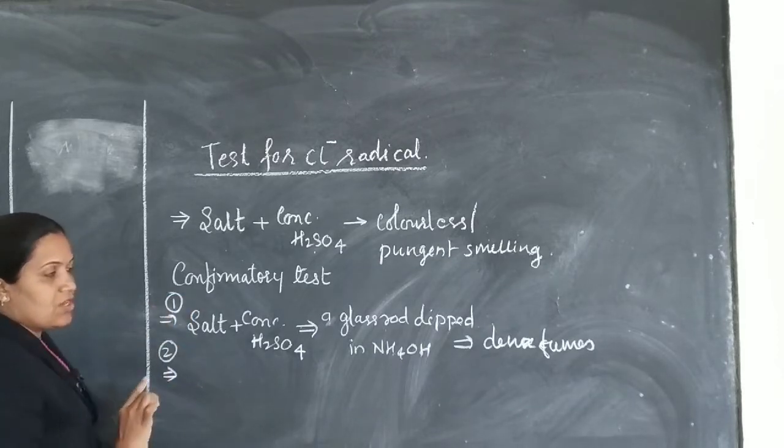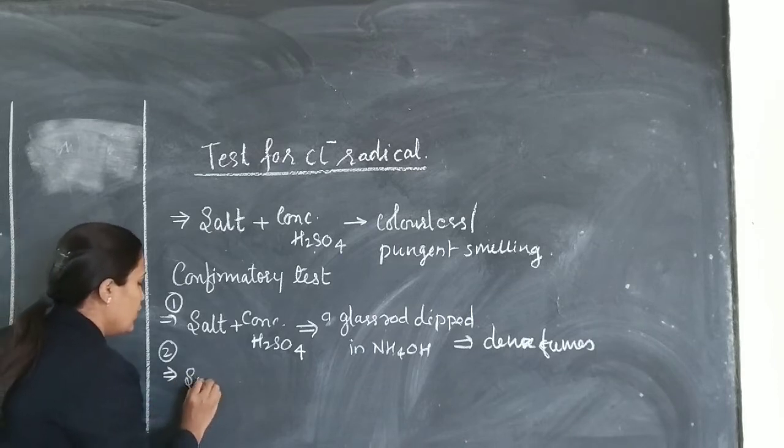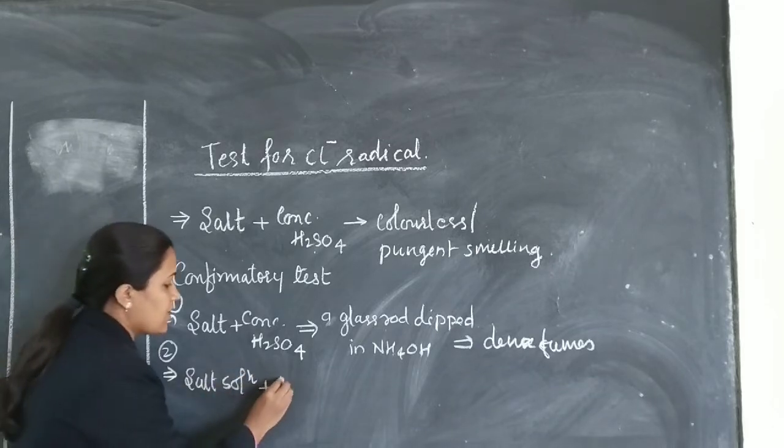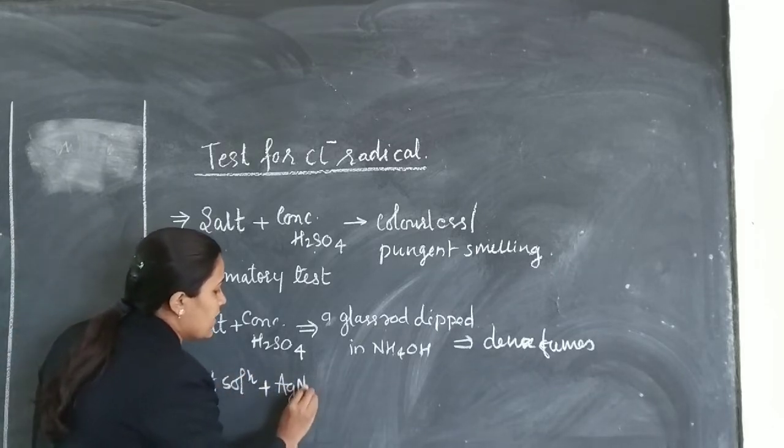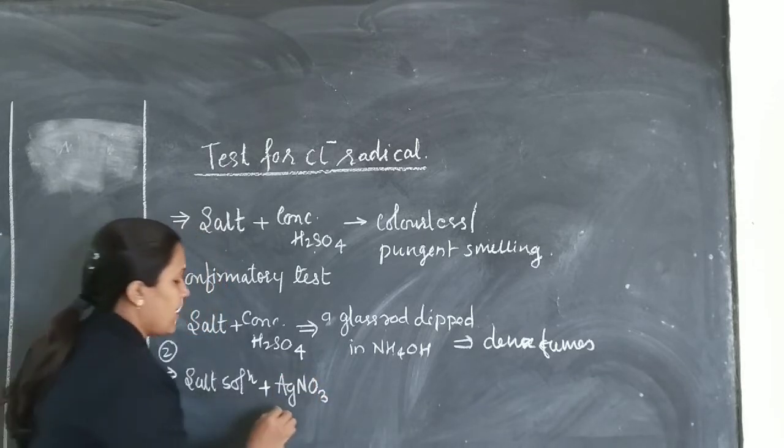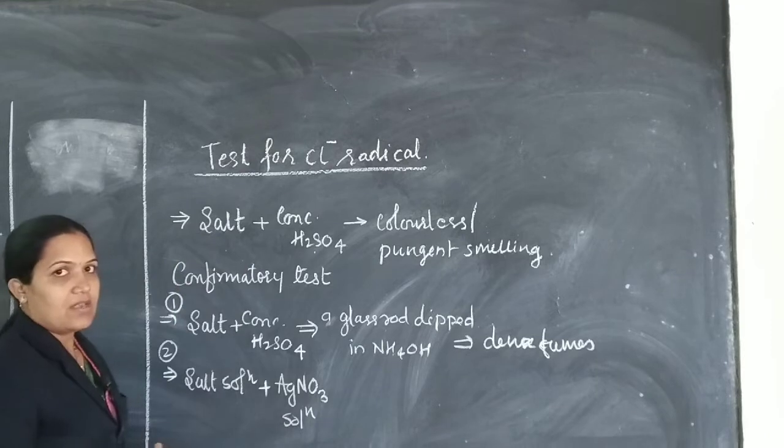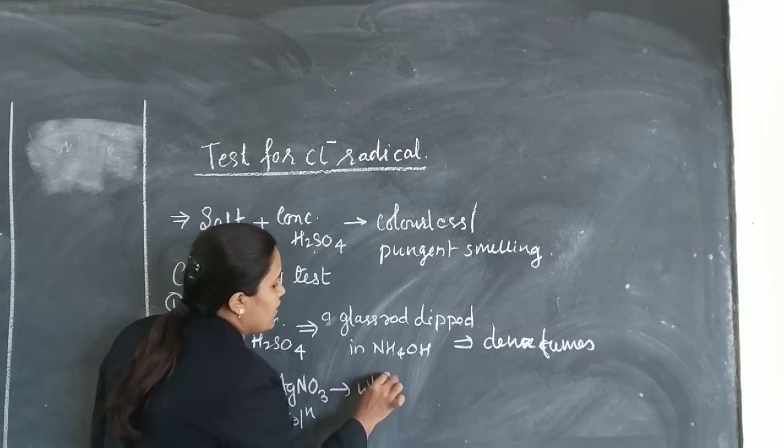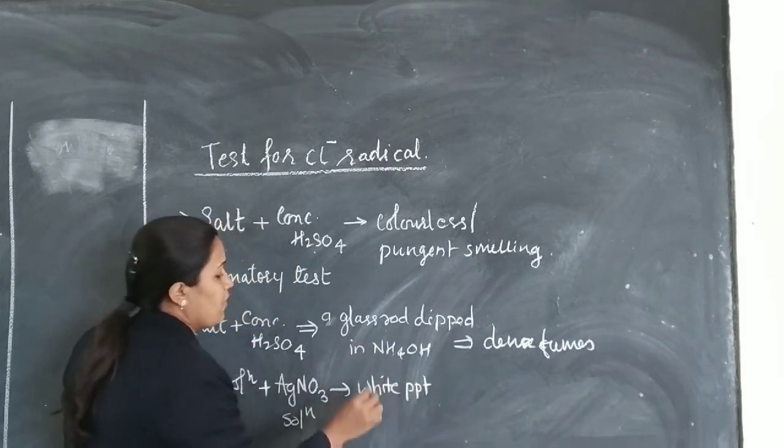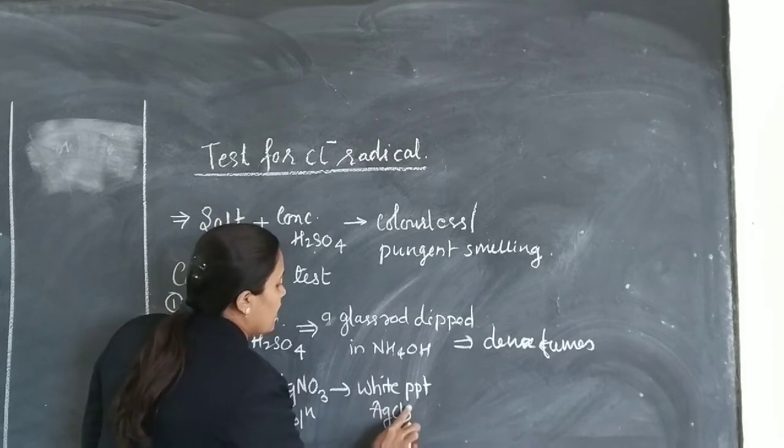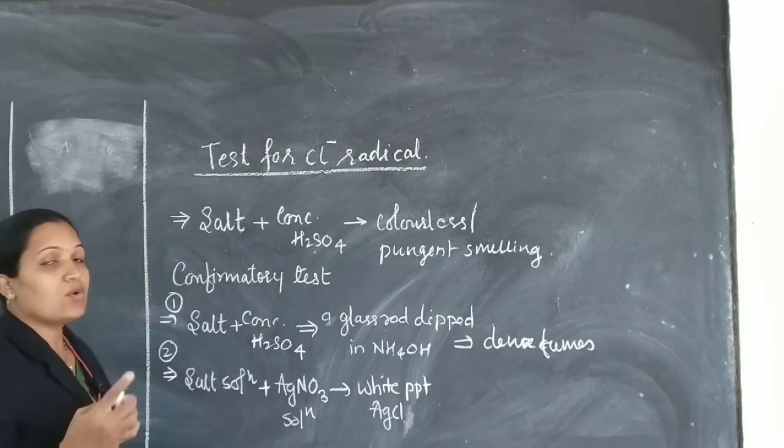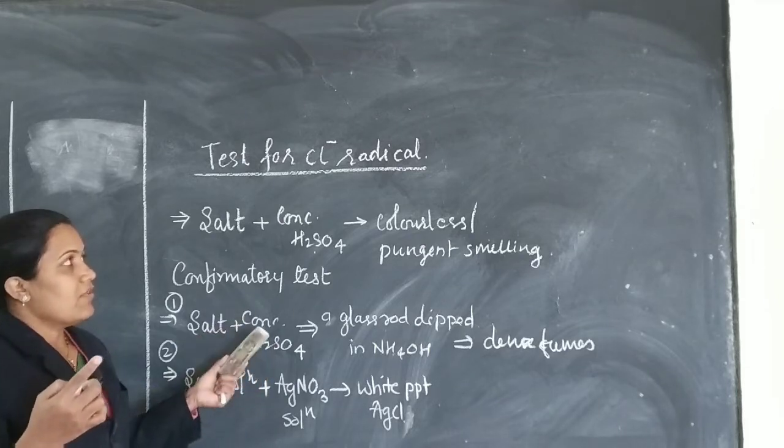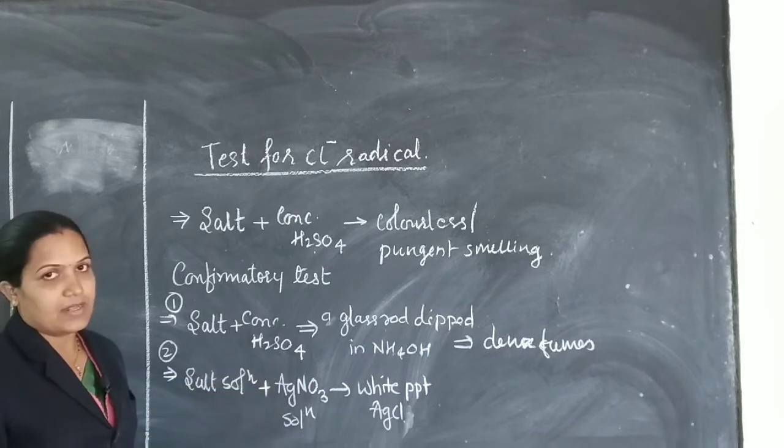Second confirmatory test: you need to prepare the salt solution. Then we will add AgNO3, which is silver nitrate solution. After adding this, if you are getting white PPT of AgCl, silver chloride, then it is confirmation of Cl negative radicals.